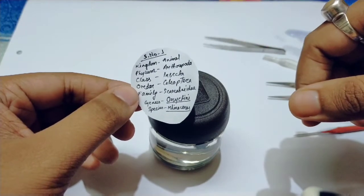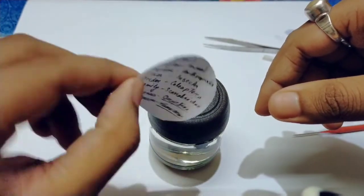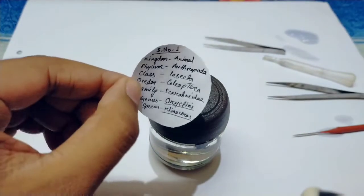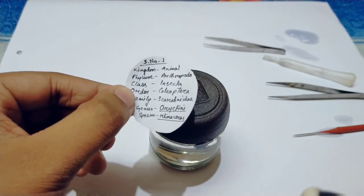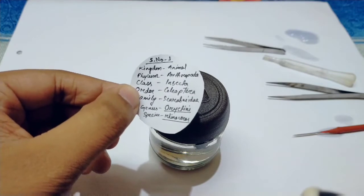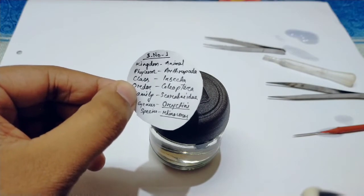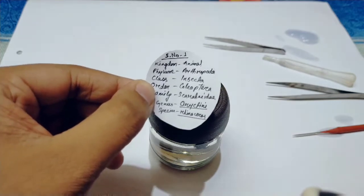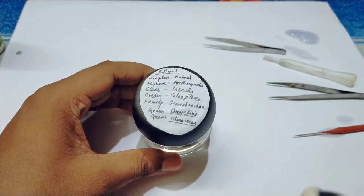So in this video, I have shown you how to preserve insect by using hand sanitizer. And now, you should paste this information or classification on the top of the container. At any time, if you look at this container or insect, you can easily know its classification or its scientific name. So let's paste this. You can see, I have done the labeling.